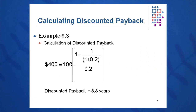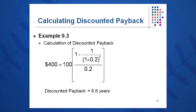Under discounted payback, we can look at C over R. The present value of the cash flows is $500 and we can calculate the discounted payback to be 8.8 years. So the CFO gets her money back in 8.8 years.